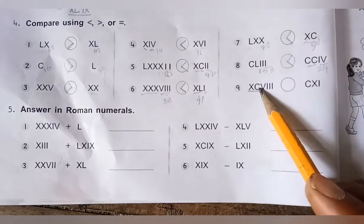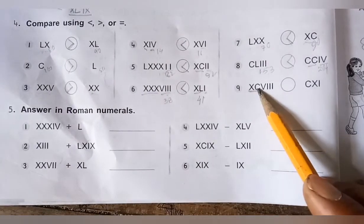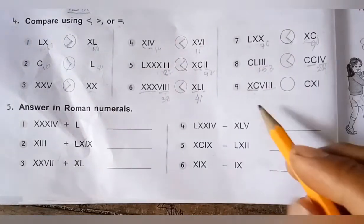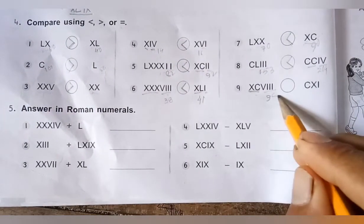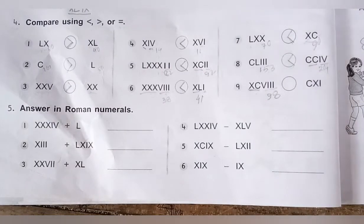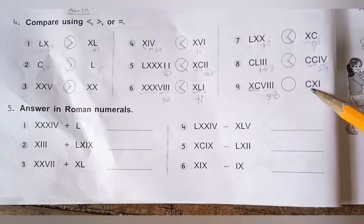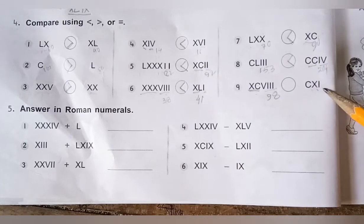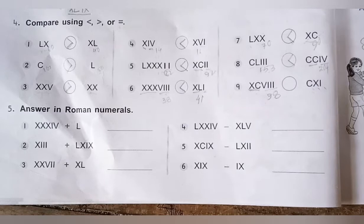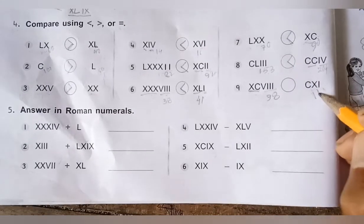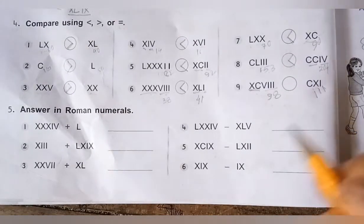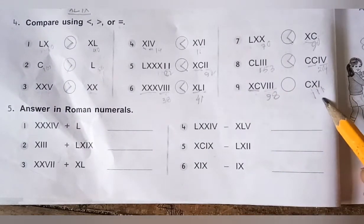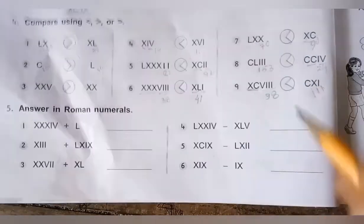Next, CXC: C is 100, X is 10 to the left, so XC is 90, and the remaining digit is 8, giving 98. The other numeral CXI: C is 100, X is 10, and I is 1, giving 111. So 98 is less than 111.